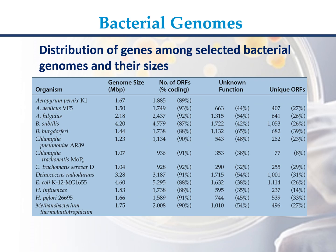Borrelia burgdorferi: genome size 1.44 Mb, 1738 ORFs (88%), unknown function 1132 (65%), unique ORFs 682 (39%). Chlamydia pneumoniae: genome size 1.23 Mb, 1134 ORFs (90%), unknown function 543 (48%), unique ORFs 262 (23%).